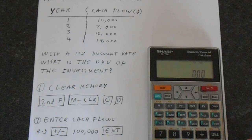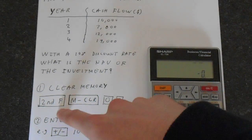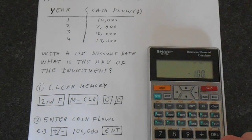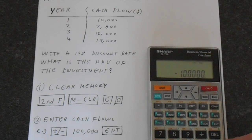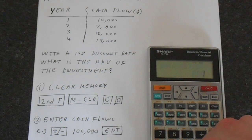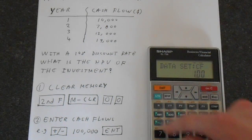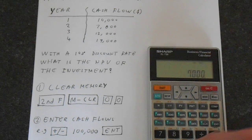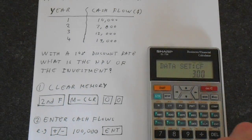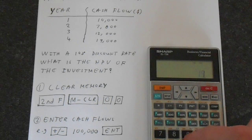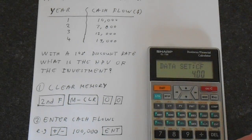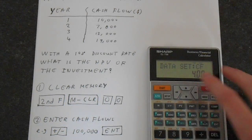The plus/minus button makes the initial value negative. Enter 100,000 — use the apostrophes to help you — then press Enter, straight into the cash flow memory. Then enter the remaining cash flows: 10,000, Enter; 7,000, Enter; 12,000, Enter; 19,000, Enter. That's all our cash flows entered.